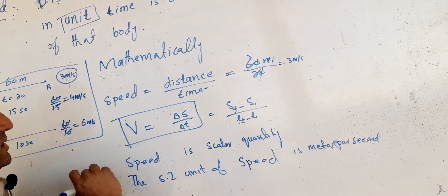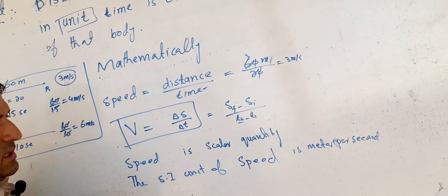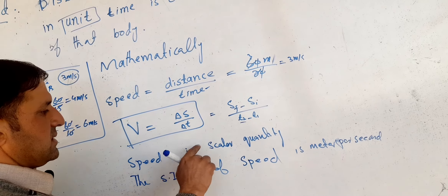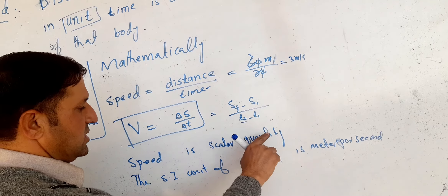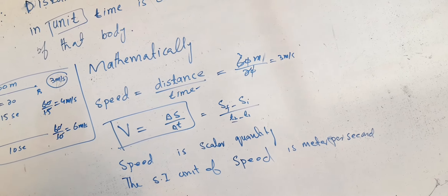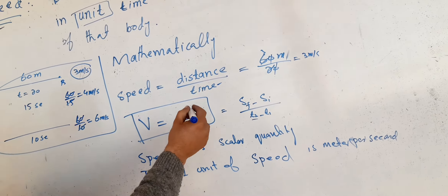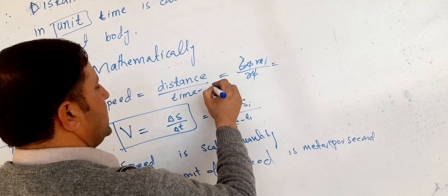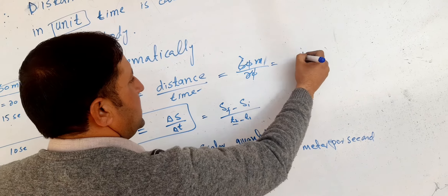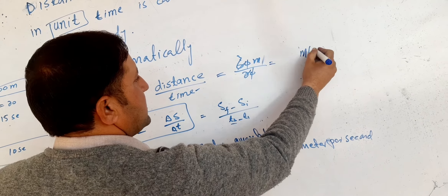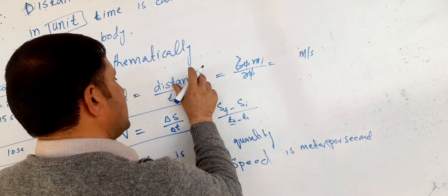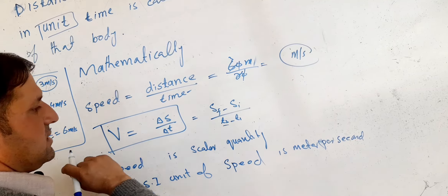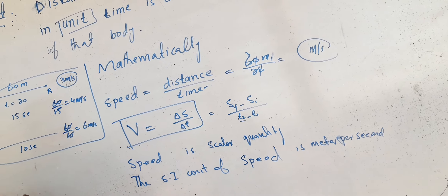Distance is a scalar quantity. The unit of speed is equal to meter per second. Meter per second is the unit of speed.